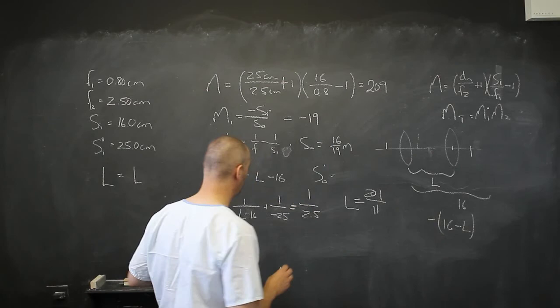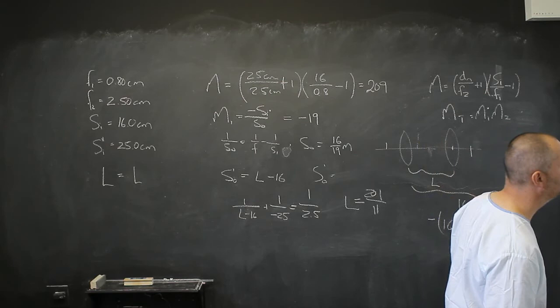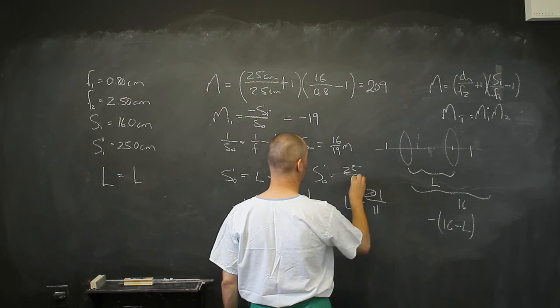Which is going to be 21 over 11 minus 16, which gives me an L value of that. And that gives me an S0 of, let me see, what did I get? 25 over 11. Just check in your calculator if that's correct.